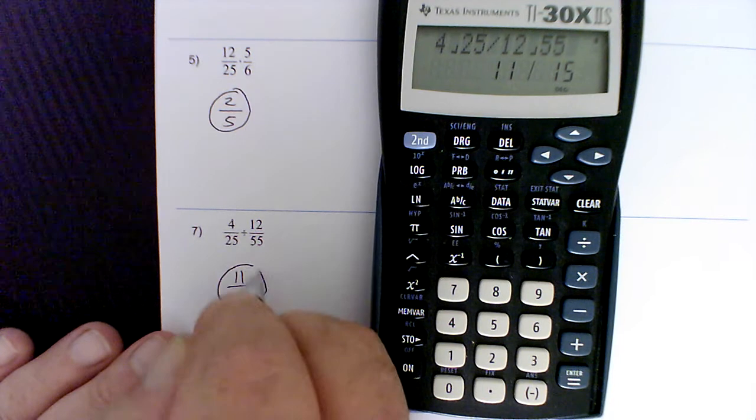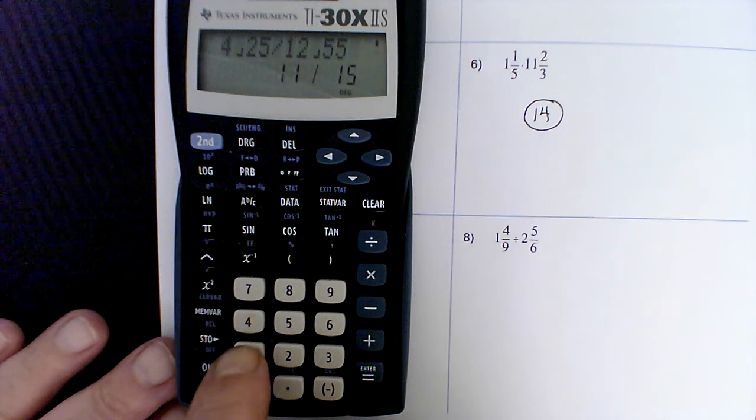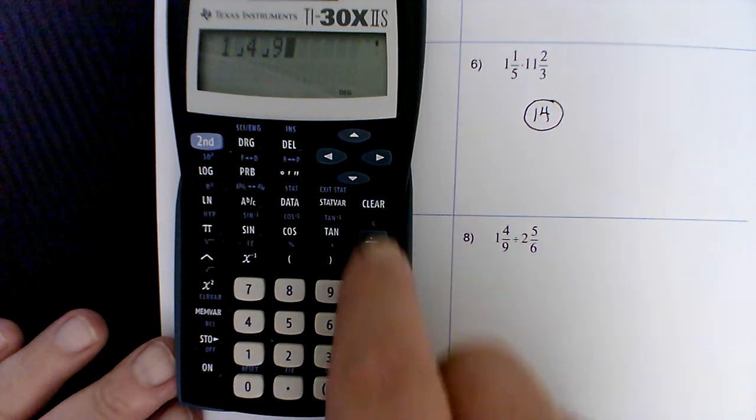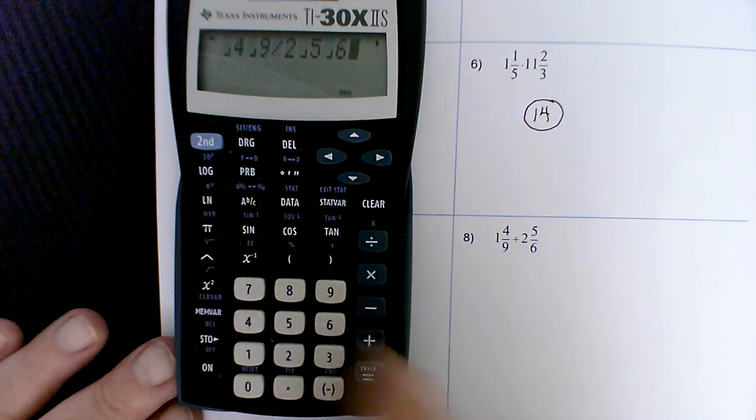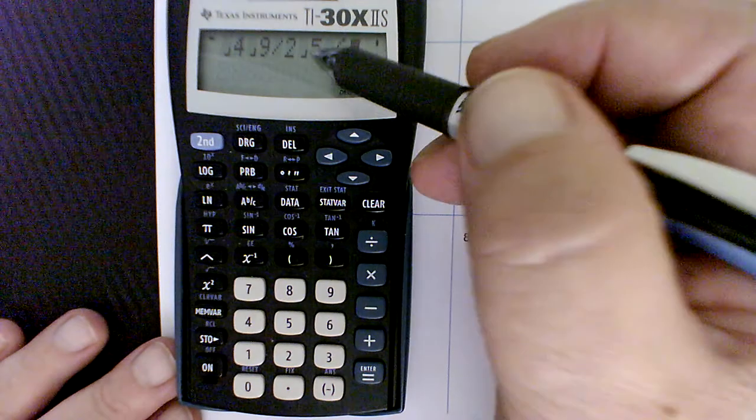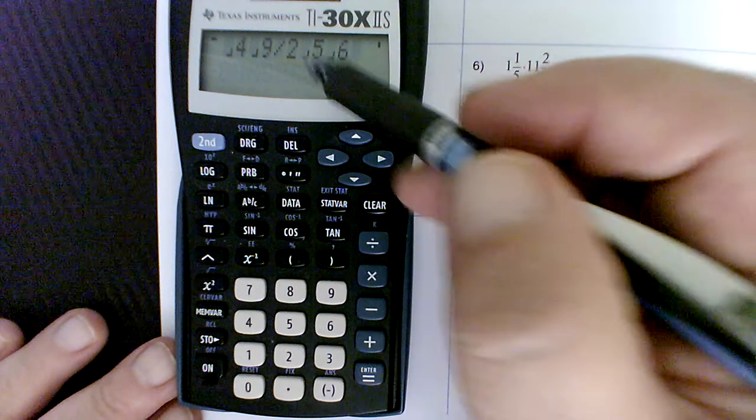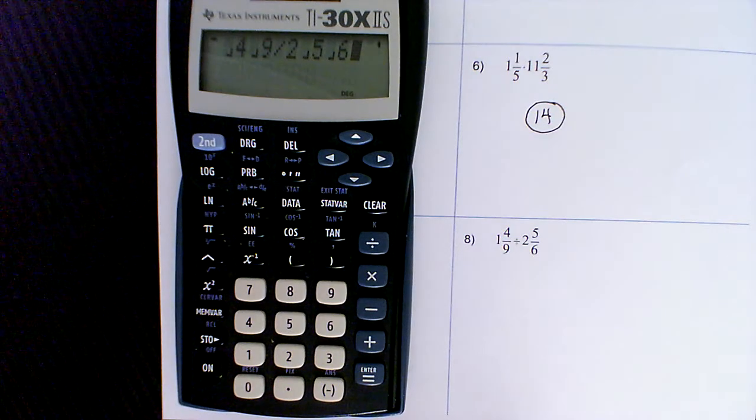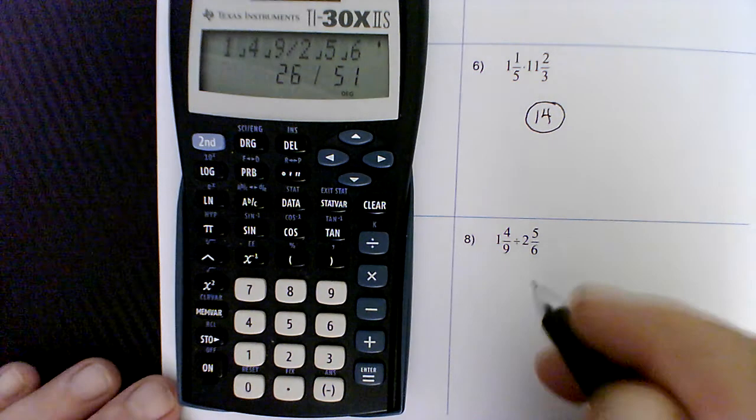And then finally a division with mixed numbers. So 1 fraction key, 4 fraction key, 9. Divided by 2 fraction key, 5 fraction key, 6. Okay, I'm going to hit enter. Before I do, just a quick comment. Notice that it doesn't put the U symbol in there. You just have to know it's the first number is the whole number part, and then the next two digits are the fractional part. So hit enter. And we get 26 over 51 for this.